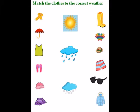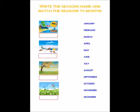The first one is 'Match the clothes to the correct weather.' In the middle, I have given three weather types: sunny, rainy, and snowy. On the right and left sides, I have given some clothes. The child has to identify which clothes we wear during which weather and draw a line from those clothes to the correct weather.